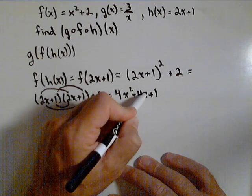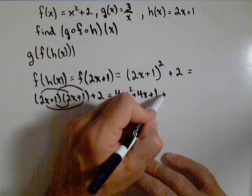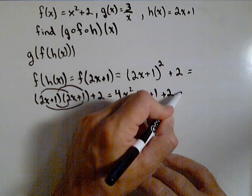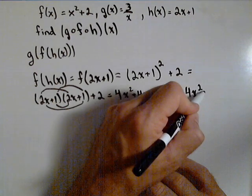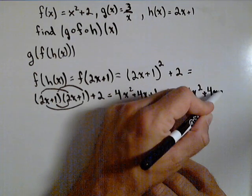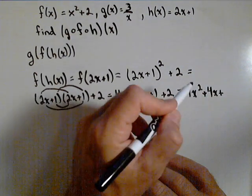And don't forget our plus two from the line before. So when done, this is four x squared plus four x plus three.